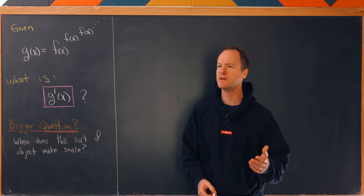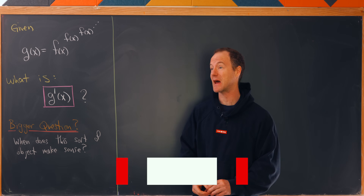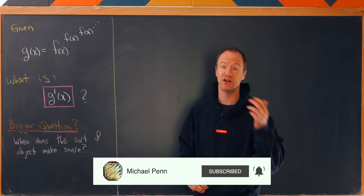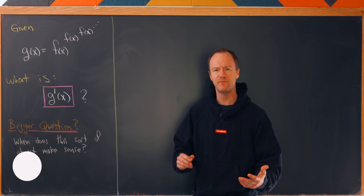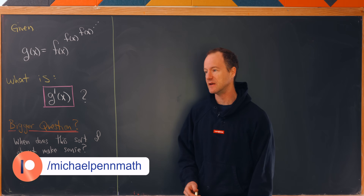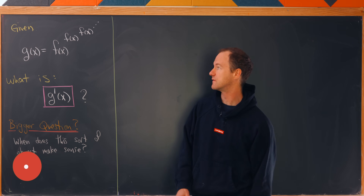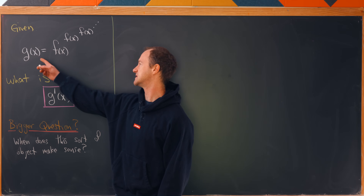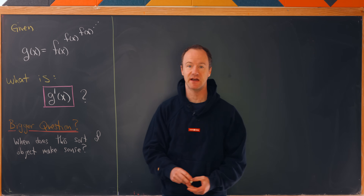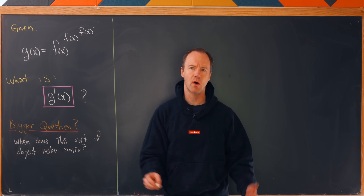Today we're going to look at what seems to be one of the internet's favorite types of functions, and that is the infinite power tower. We're going to look at a fairly general one built out of a single arbitrary function, and we're going to find its derivative. So let's say g of x is equal to this power tower built out of the function f of x — so it's f of x to the f of x to the f of x, and so on.